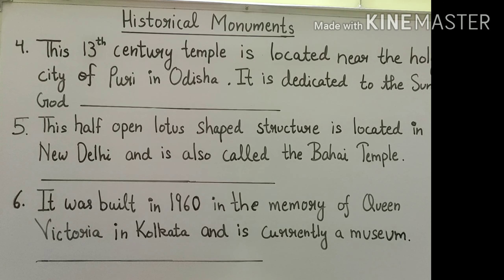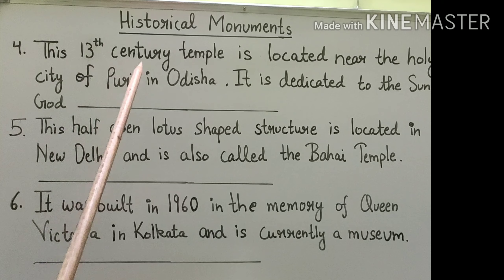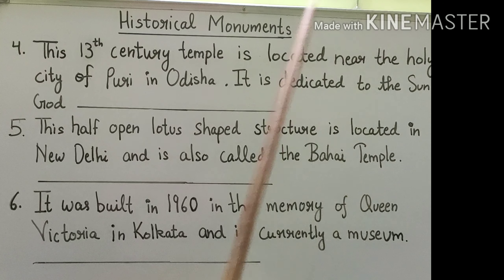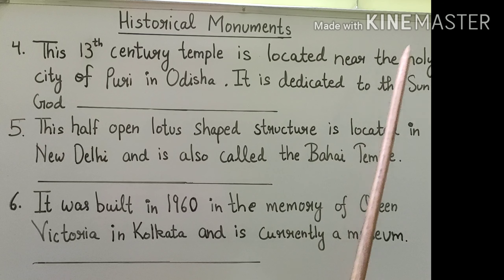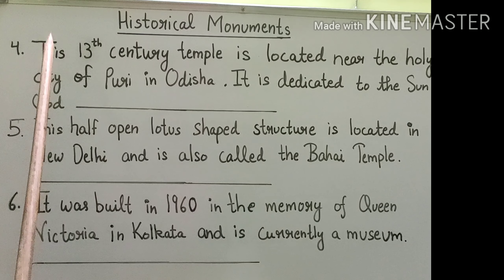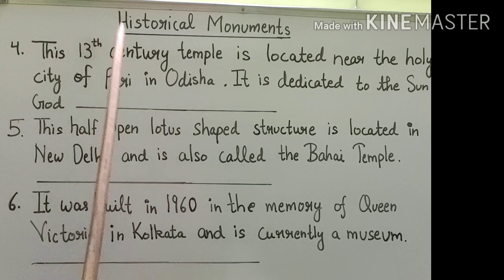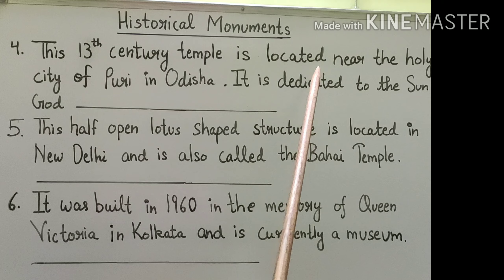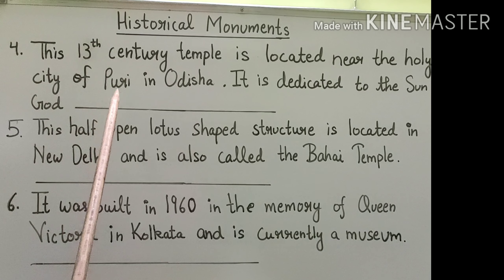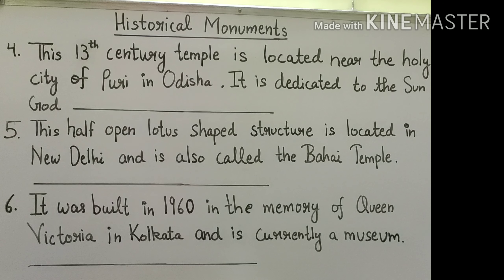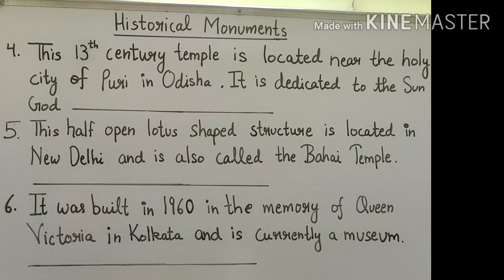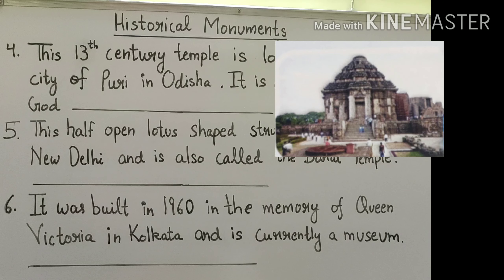Question number 4: This 13th century temple is located near the holy city of Puri in Odisha. It is dedicated to the sun god. What is the name of that temple? The answer is Konark Sun Temple.